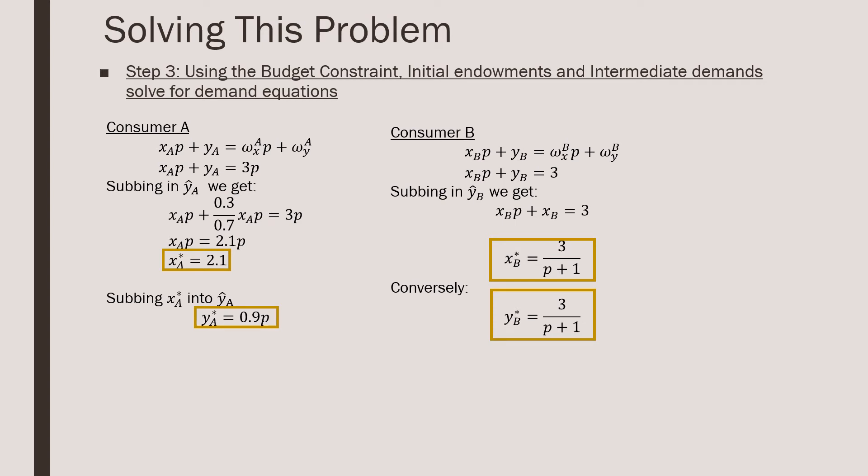And we see that it's quite invariant, so it doesn't really depend so much on prices. Subbing this final demand into our intermediate demand for y hat A, we get 0.9 times p, so that's going to directly depend on the price there.